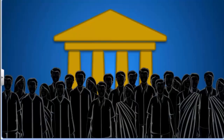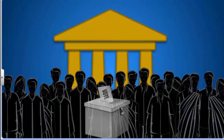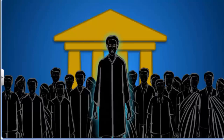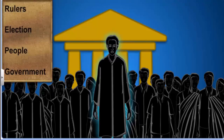In the previous chapter, we discussed a simple definition of democracy: democracy is a form of government in which the rulers are elected by the people. Let's first analyze the word 'rulers.'